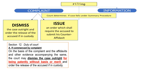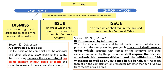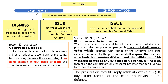If the case is commenced through an information, the court will issue an order requiring the accused to submit his counter-affidavit. That is Section 12, letter D: when the case is commenced by information or is not dismissed, the court shall issue an order together with copies of the affidavits and other evidence submitted by the prosecution, requiring the accused to submit his counter-affidavit and the affidavits of his witnesses, as well as any evidence. The prosecution may file a reply within ten days after receipt of the counter-affidavits of the defense.